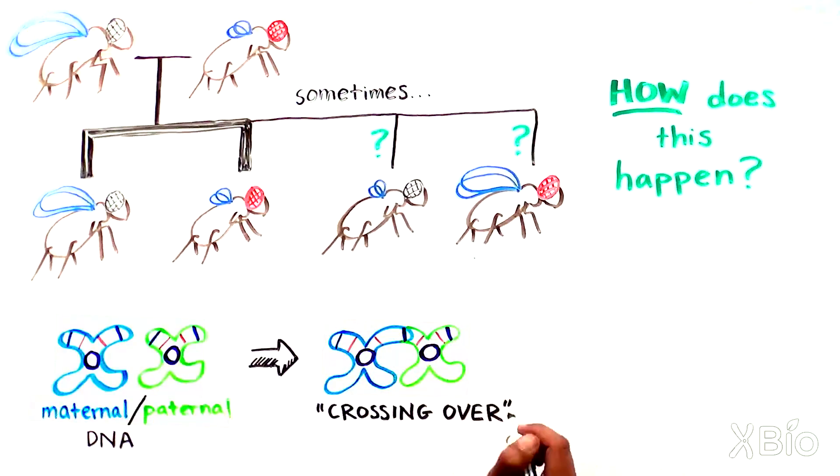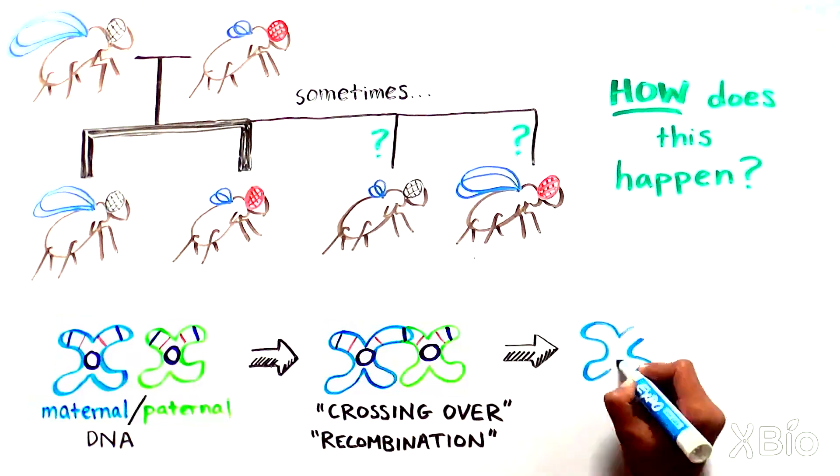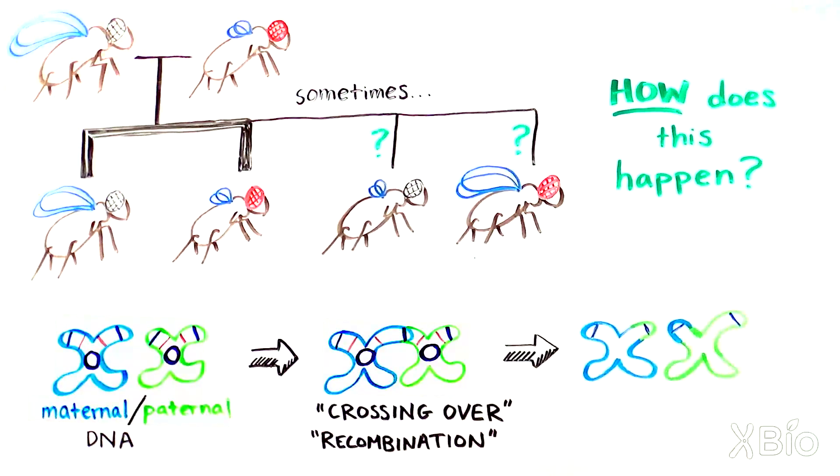This exchange is called crossing over or recombination. If the crossover point occurs in between the gene for eye color and the gene for wing length, new combinations of traits like white-short or red-long could be found in the offspring.